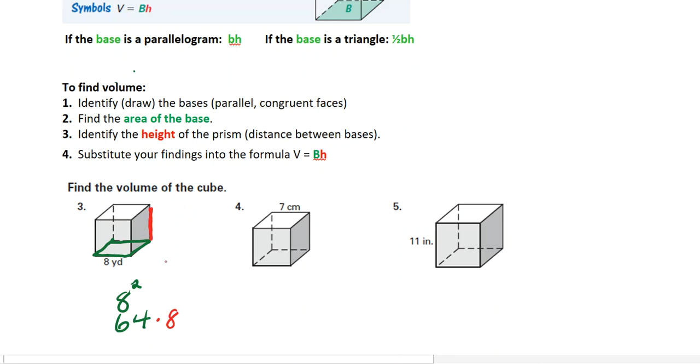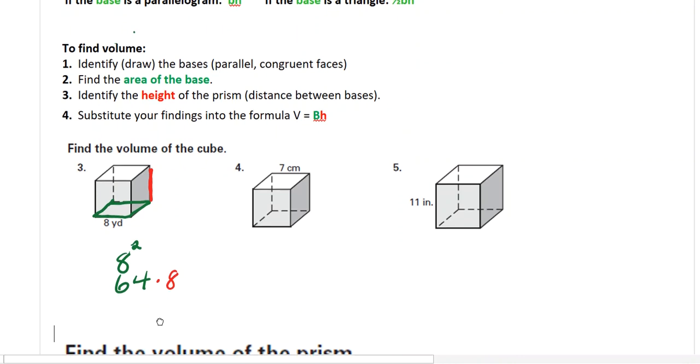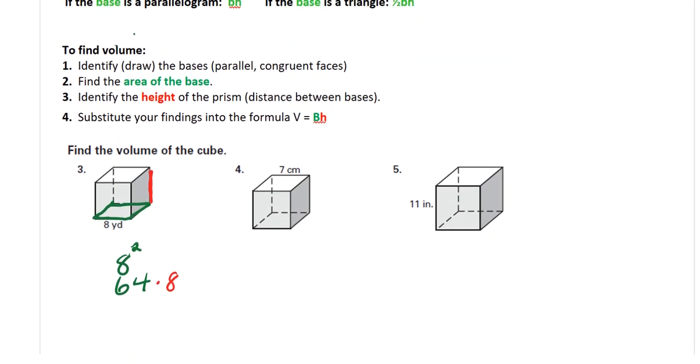So we're going to say area of the base times the height, and 64 times 8 is 512. Now the unit of measure for volume is always cubed, and you want to remember that, because we're dealing with three dimensions.